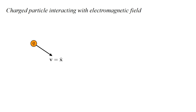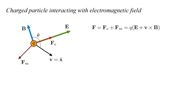We have a point particle with charge Q at position X, with velocity V equals X dot, and electric and magnetic fields E and B. The electric force F_e is parallel to the electric field. The magnetic force F_m is perpendicular to both the magnetic field and the velocity. As we discussed in video three of this series, the total force on the charge is Q times the quantity E plus V cross B. Writing mass times acceleration, M X double dot, equals this force gives us the equation of motion.